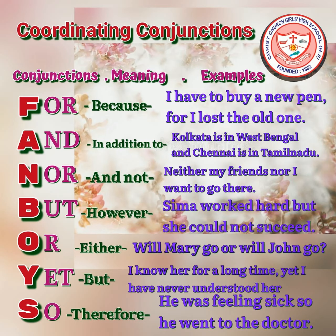Next in the row we have 'or,' meaning 'either.' We use the conjunction 'or' to join two alternative clauses. For example: 'Will Mary go or will John go?' — meaning either Mary will go or John will go. The coordinating conjunction 'or' is used to present the two alternatives.